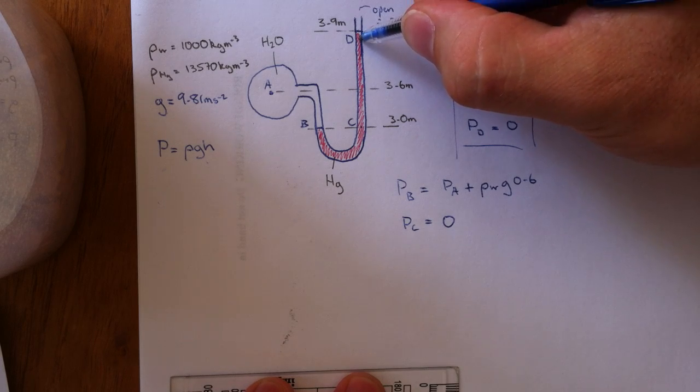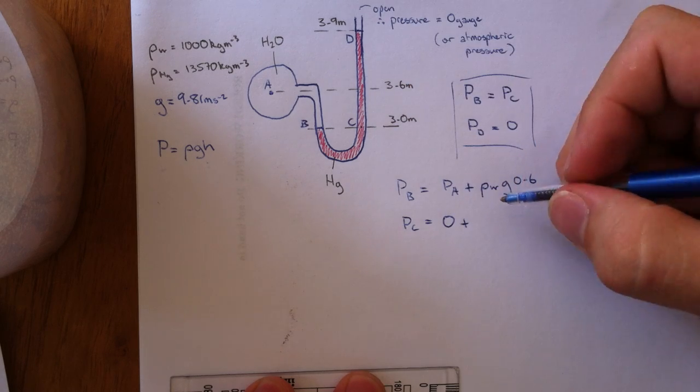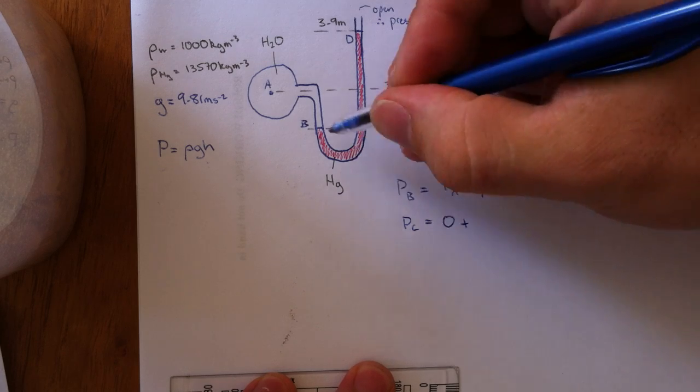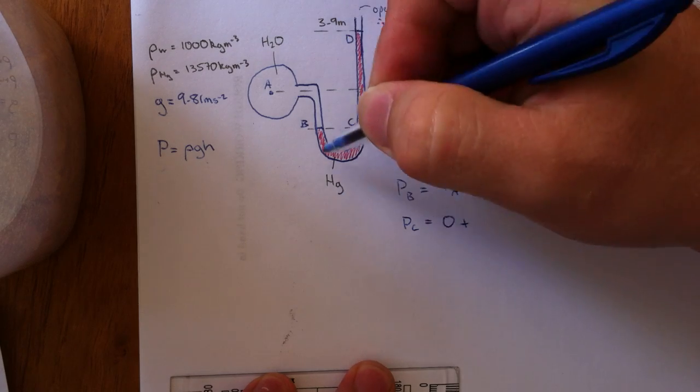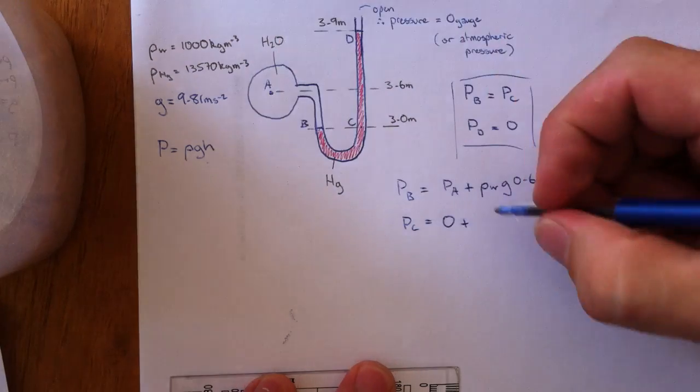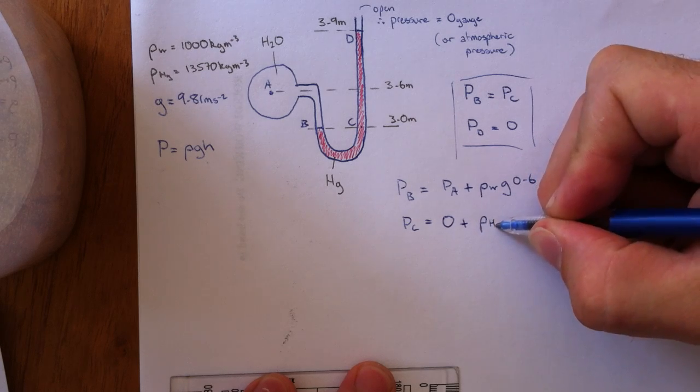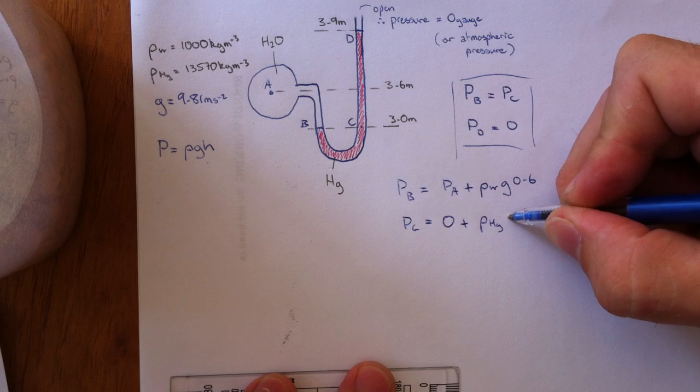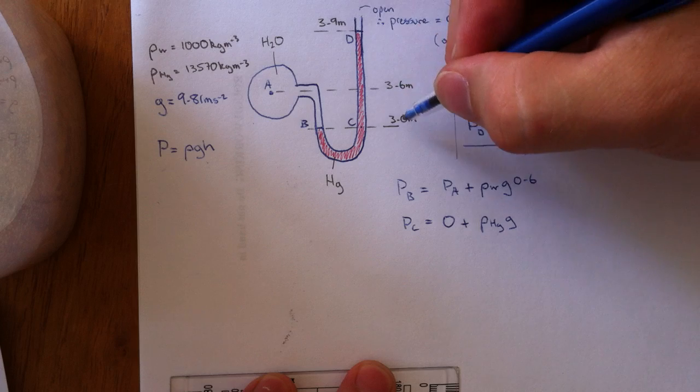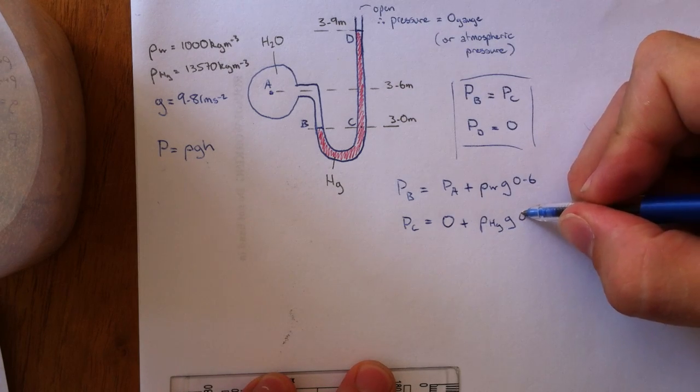0 plus, plus because we're going deeper into the liquid, pressure is increasing, plus density of this liquid here which in this case is the manometer liquid. The density of that is mercury, which is density of mercury times gravitational acceleration times the height, 3.9 minus 3, which is 0.9.